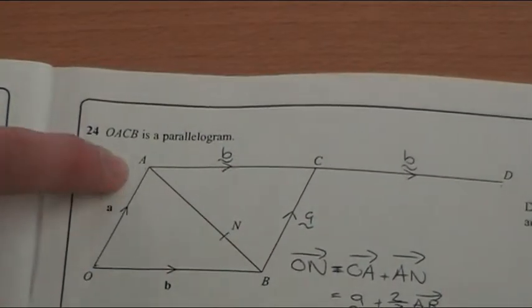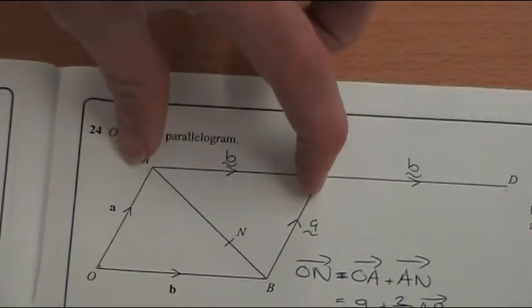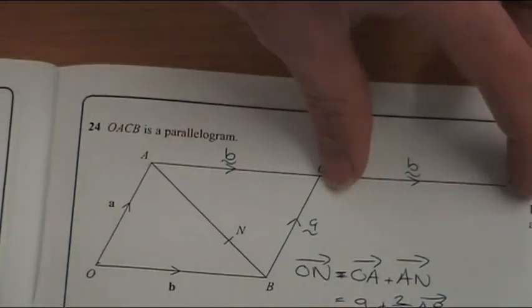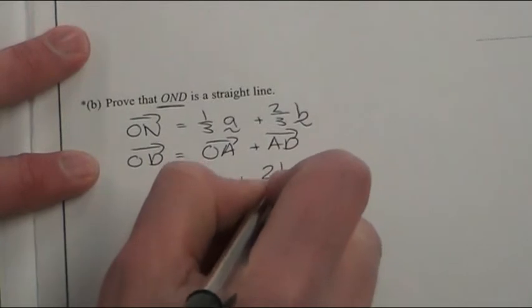So OA is a, and like I explained in the previous video that's b because these are parallelograms. And we're told that this is the same so that is two b's. So it's one a plus two b's.